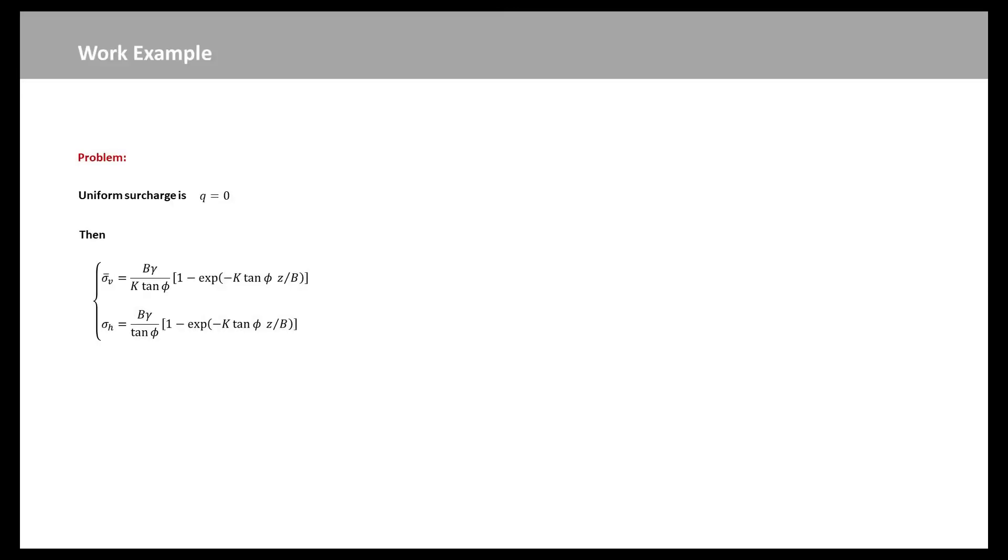Now we will make an example. Here, we assume the uniform pressure q is zero and the internal friction of soil is 30 degrees. So, the vertical stress sigma-v bar and the lateral stress sigma-h are shown here. In this case, we use the Rankine's earth pressure to compare the current theory.